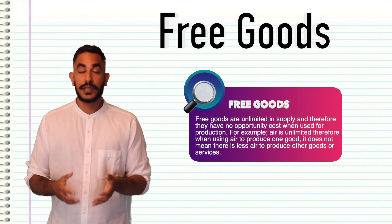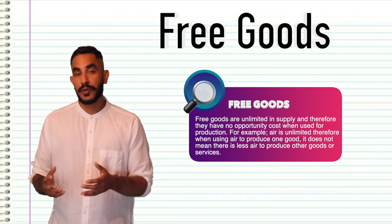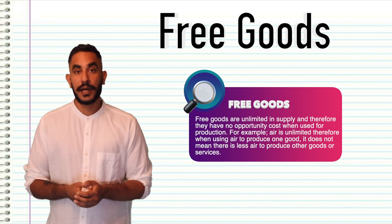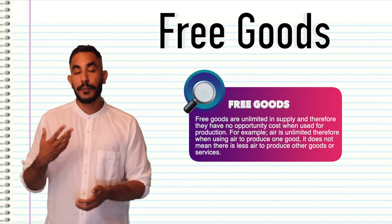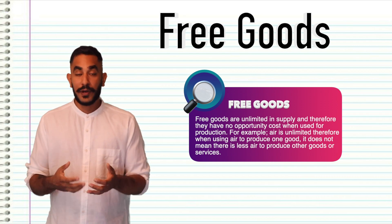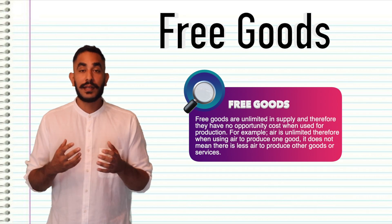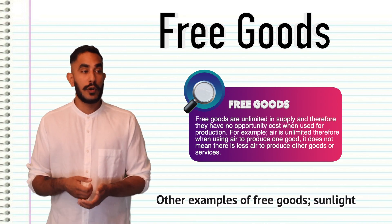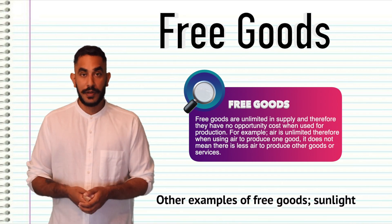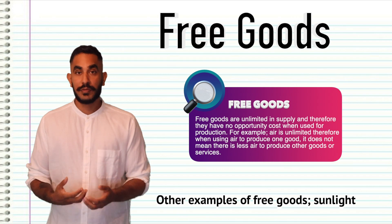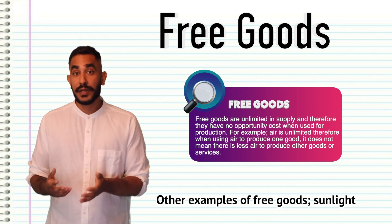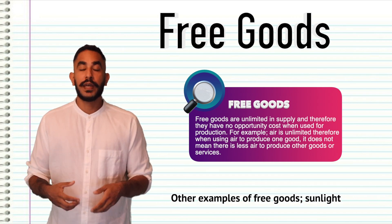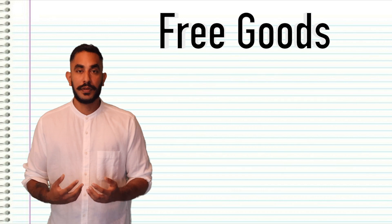A free good is the opposite of an economic good, because free goods are unlimited in supply. For example, air. If I use air to blow up a balloon, it doesn't mean that there's less air to blow up a tire with. Therefore, air is not a scarce resource, but can be used to produce goods and services. Therefore, it is a free good.